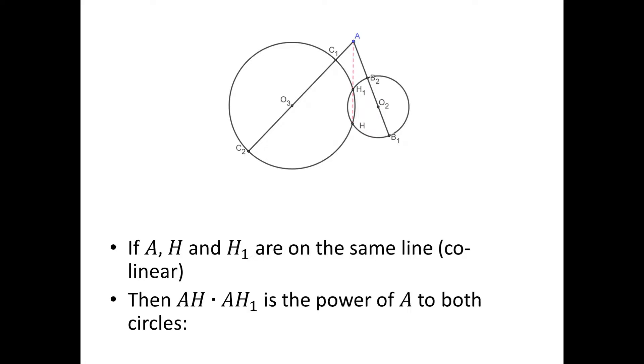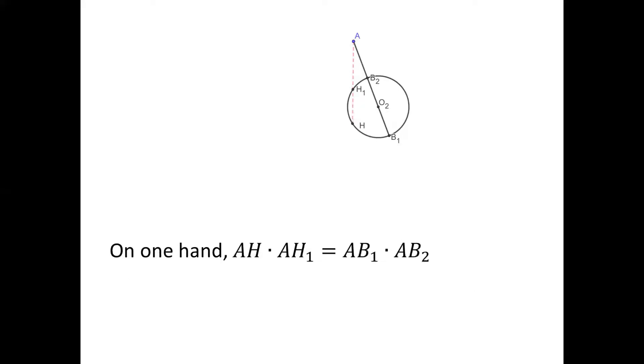If it is true, then AH · AH1 is the power of A to both circles. This is interesting. On one hand, applying the power of point theorem to the circle on the right side, we have AH · AH1 = AB1 · AB2.